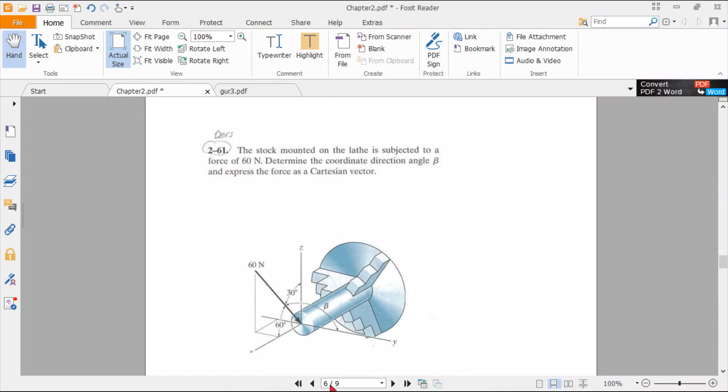Okay, so let's show some examples. Our example is 261. The stock mounted on the lathe is subjected to a force of 60 N. Determine the coordinate direction angle beta and express the force as Cartesian vector.